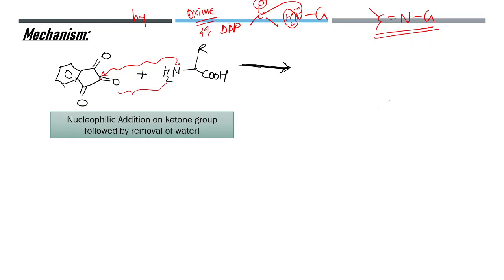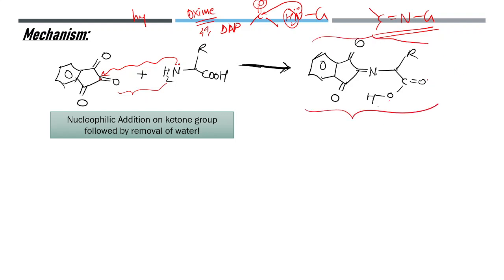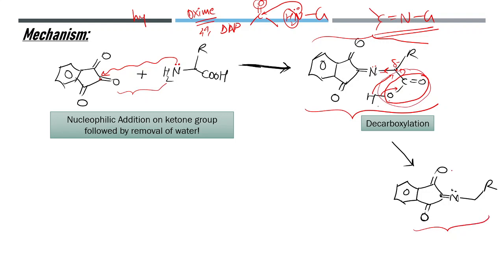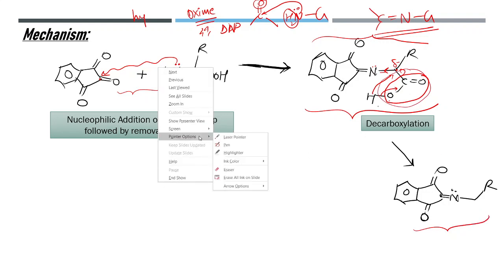This is nucleophilic addition to the ketone group followed by dehydration. Looking at the resulting molecule, the carboxylic acid group can decarboxylate very easily because the nitrogen nearby exerts an electron-withdrawing effect. Electrons transfer through the transition state, a delta-minus charge on the departing CO2 is stabilized, a proton transfers, and the CO2 molecule is released.